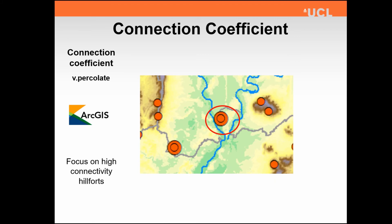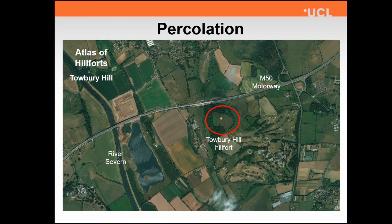Zooming in on this particular site in more detail, we can see it lies between the confluence of two rivers, which is quite interesting because that county boundary is actually including this peninsula. Looking at it in the Hillforts Atlas, we find that this site is Toberi Hillfort. It's situated extremely close to the River Severn, which is a major navigable thoroughfare in prehistory. Interestingly, there's a motorway going right next to it, and that motorway is actually one of the oldest motorways in Britain. So our connection parameter — it's a statistic — has picked out a particular site, suggesting it is something of great interest and potentially great importance in prehistory.